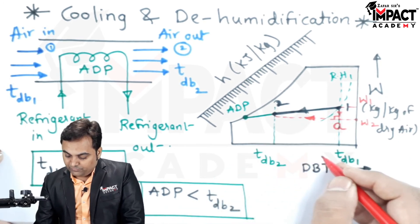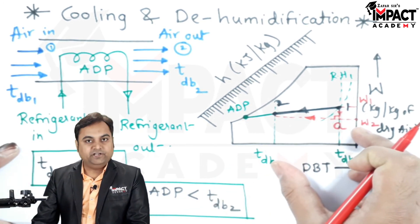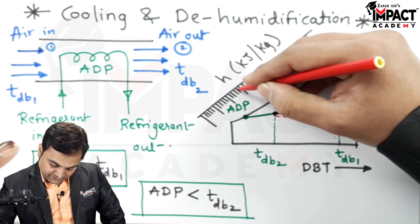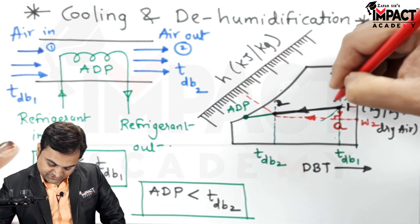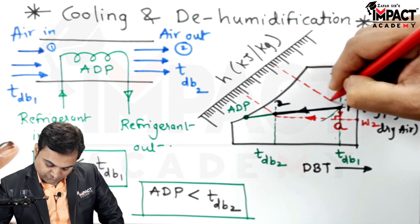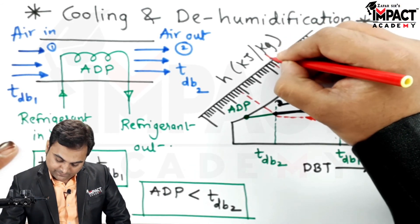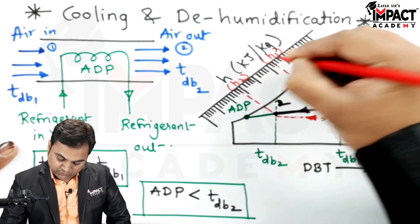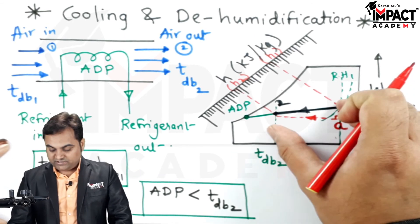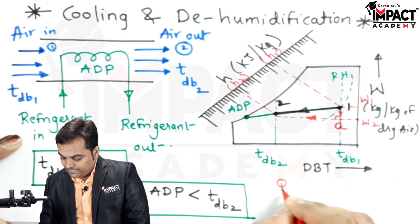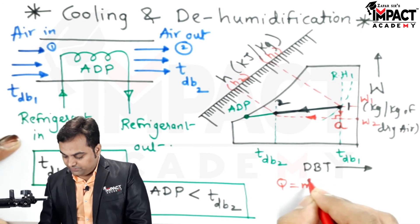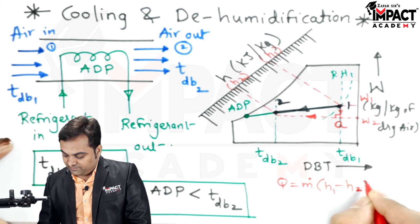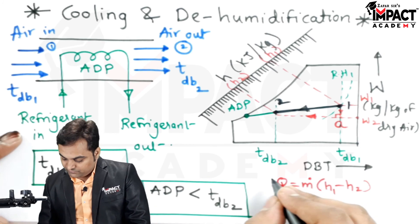The amount of heat removed from the air can be found by projecting the points onto the specific enthalpy lines, which directly gives us the heat removed. Here we have h1 and h2, so h1 minus h2 gives the amount of heat removed during the cooling and dehumidification process. This is multiplied by ṁ, the mass flow rate of air, and the specific enthalpy difference h1 minus h2, giving a result in kilowatts.